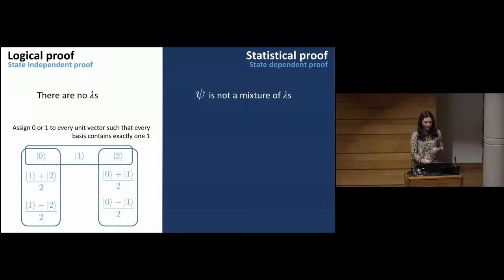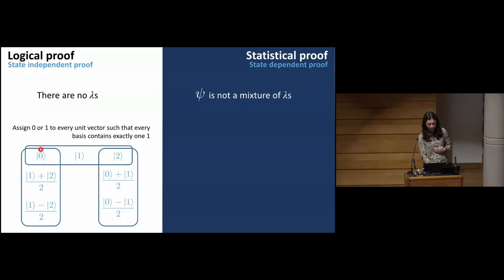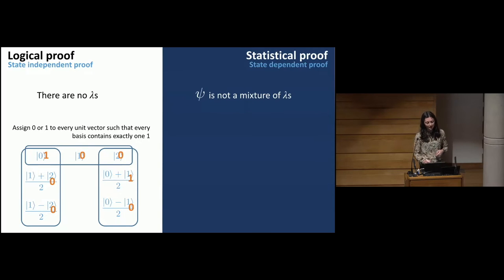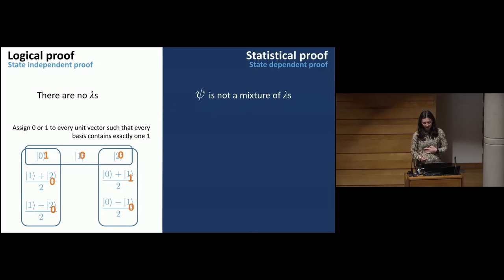To find a logical proof, one equivalent approach is to look for some bases, consider measurements in those bases, and try to assign zeros or ones to every vector so that there is exactly one 'one' in each basis. For three bases, for example, this can be a valid assignment — those bases don't give a logical proof. But if you add more and more bases, you can find there is no way to assign zeros and ones.